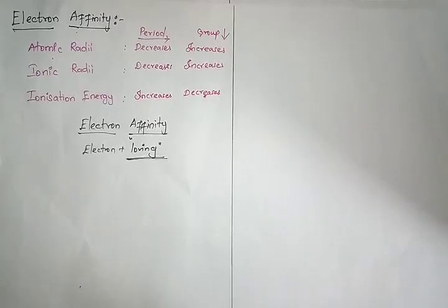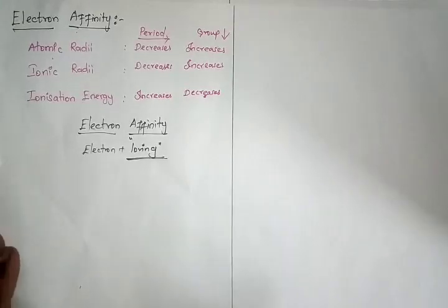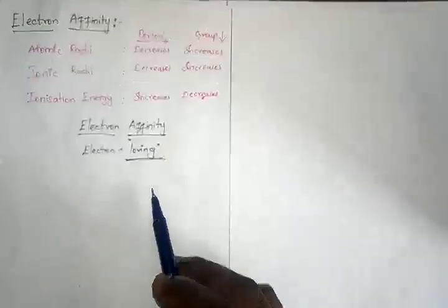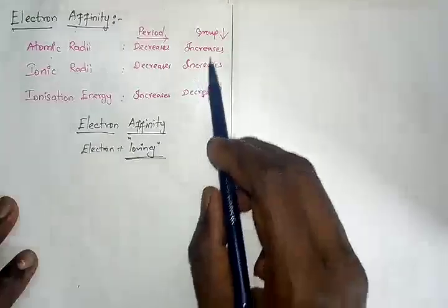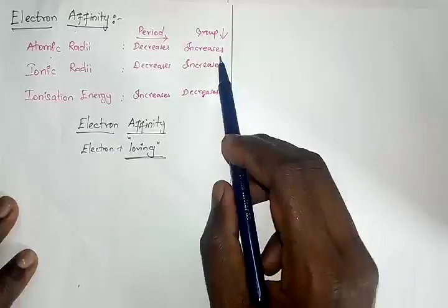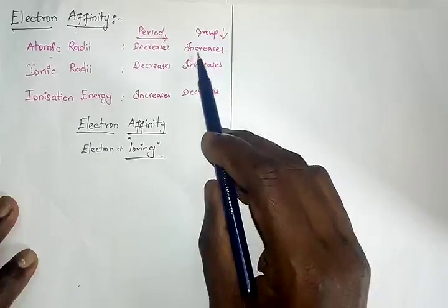When we talk about atomic radius, it's the distance between the nucleus and the outermost electron — that is the radius of an atom. When you go across the period, the size of an atom decreases, so the atomic radius decreases. Along the group, when you go down, energy shells are added, so the distance between the nucleus and the outermost electron increases, meaning the atomic radius increases.